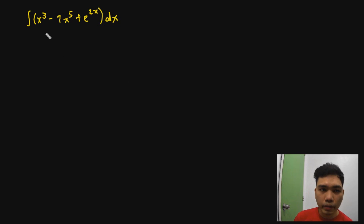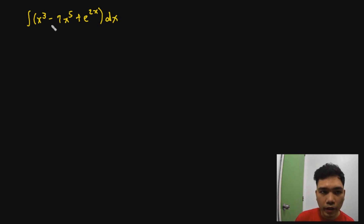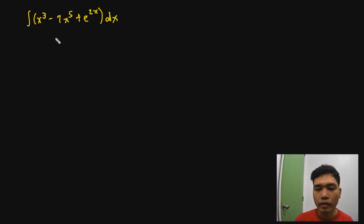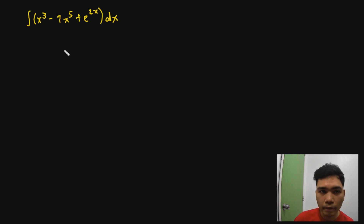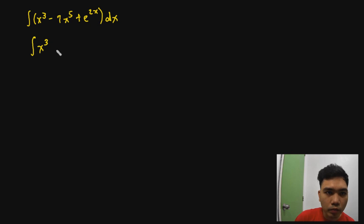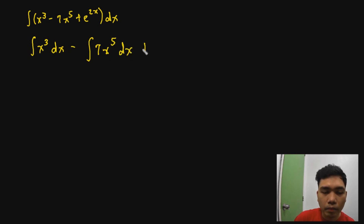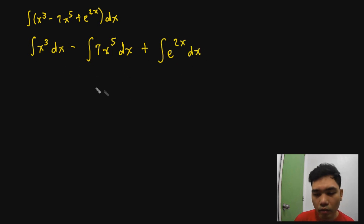Let's use these rules to solve what we call fitting integrands — the most basic of our integration procedures. When we say we have a fitting integrand, we're talking about functions that look very easy to integrate and just fit the rules we've discussed. Let me have the first example: the integral of x cubed minus 7x to the fifth plus e to the 2x, dx.